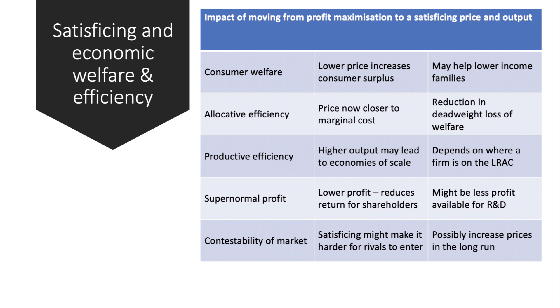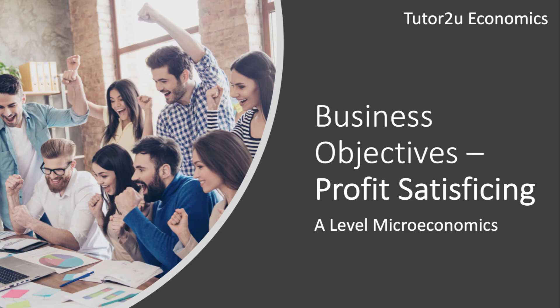Satisficing behaviour by existing firms could well affect, over time, the contestability of a market. If existing firms are making less profit because they're satisficing, that might make it less attractive, a little harder, for new firms to enter the market. And if that's the case in the long run, then firms may move back from satisficing, nudge their prices higher and move more towards profit maximisation. Either way, satisficing is an important alternative business objective. Very few firms are pure profit maximisers — most firms have a range of objectives, depending on their history, their position, their level of competition, and the stage of the economic cycle. So satisficing is a key alternative objective to put into your revision notes.